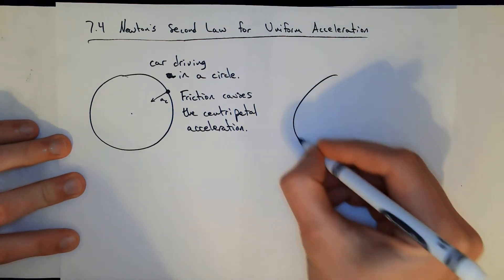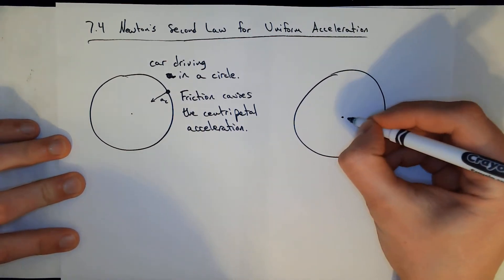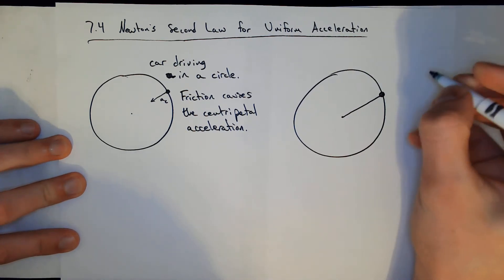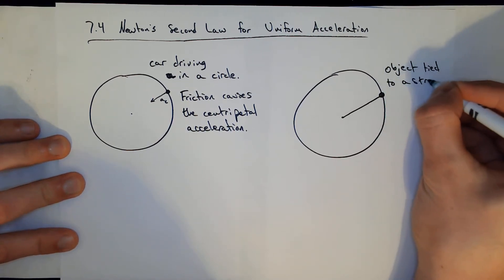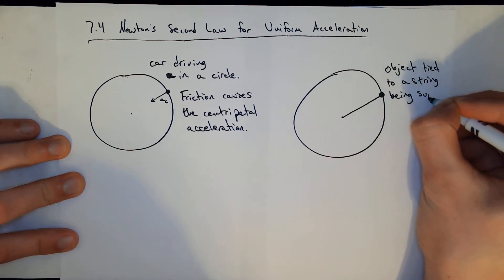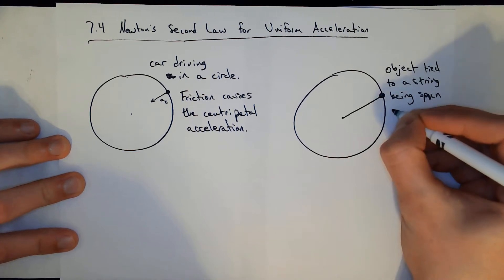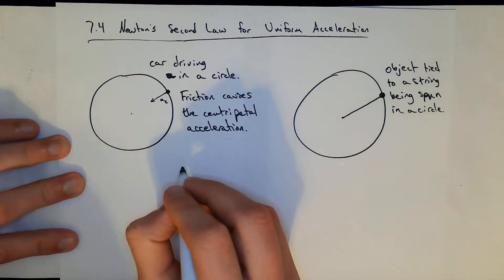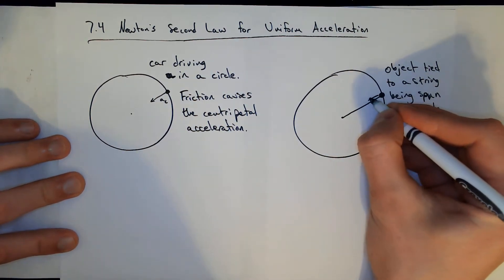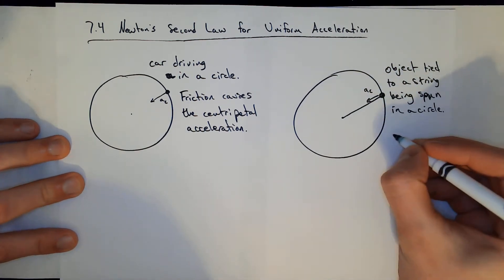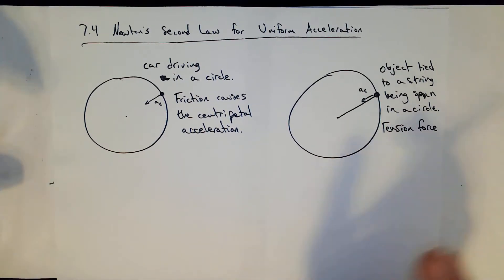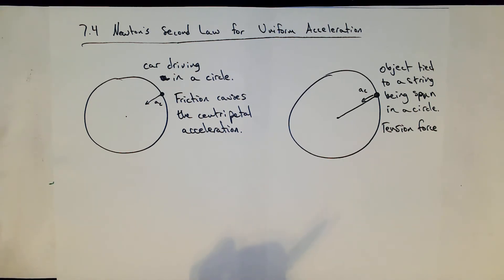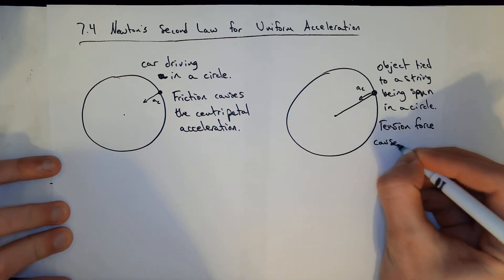You can also have an object tied to a string from some center, being spun in a circle. In that first case it was friction causing the centripetal acceleration; over here it's a tension force. Centripetal forces are just a collection of forces — all they mean is some force that points toward the center of a circle. It could be friction, tension, or gravity.